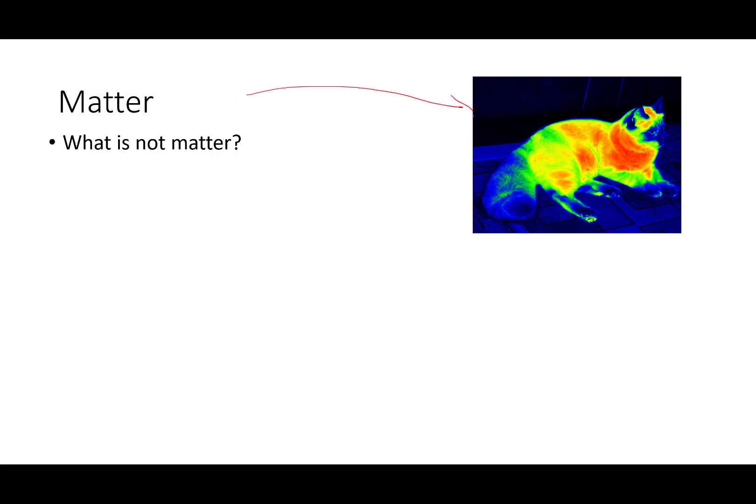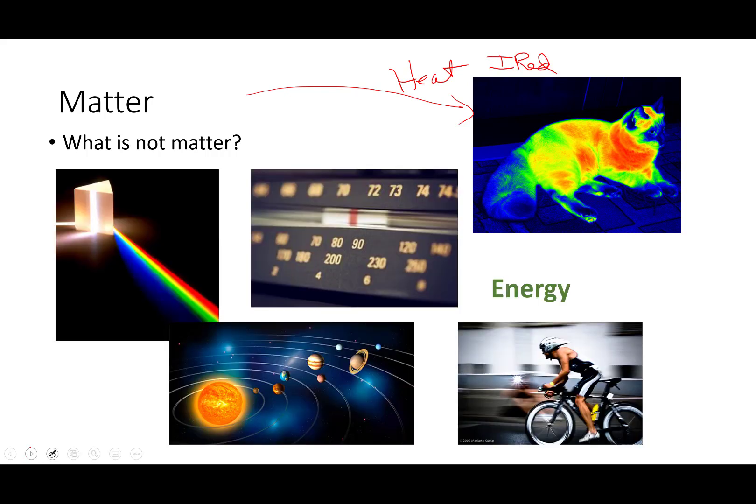I'm not talking about the kitty cat pictured over here, but the fact that this is an infrared photograph of the cat. It is actually showing the heat that is given off by the cat in infrared light. So light is actually one of the things that is not matter.